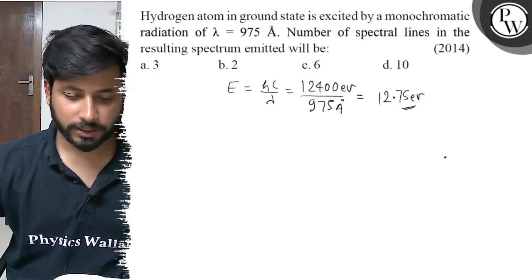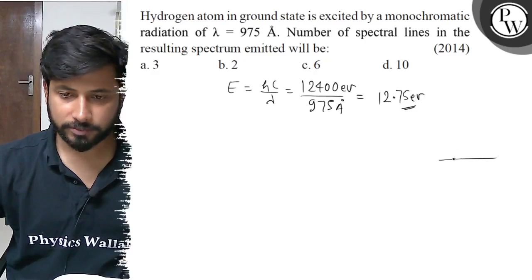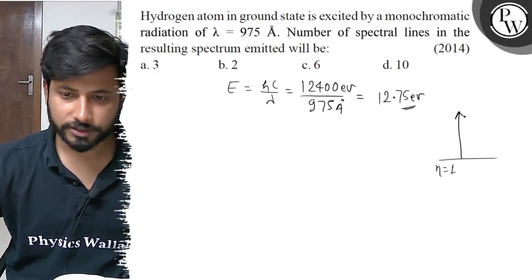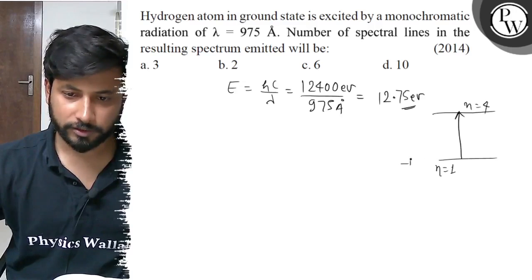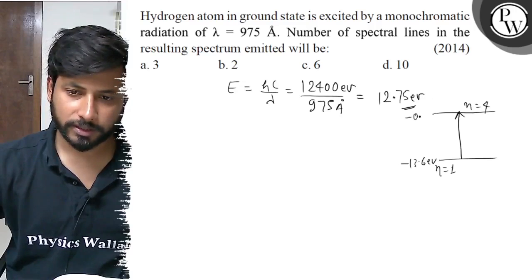Now, if I am in ground state, with this energy 12.75, this corresponds to n equals to 4. n equals to 1 is minus 13.6 electron volts, and n equals to 4 is minus 0.85 electron volts.